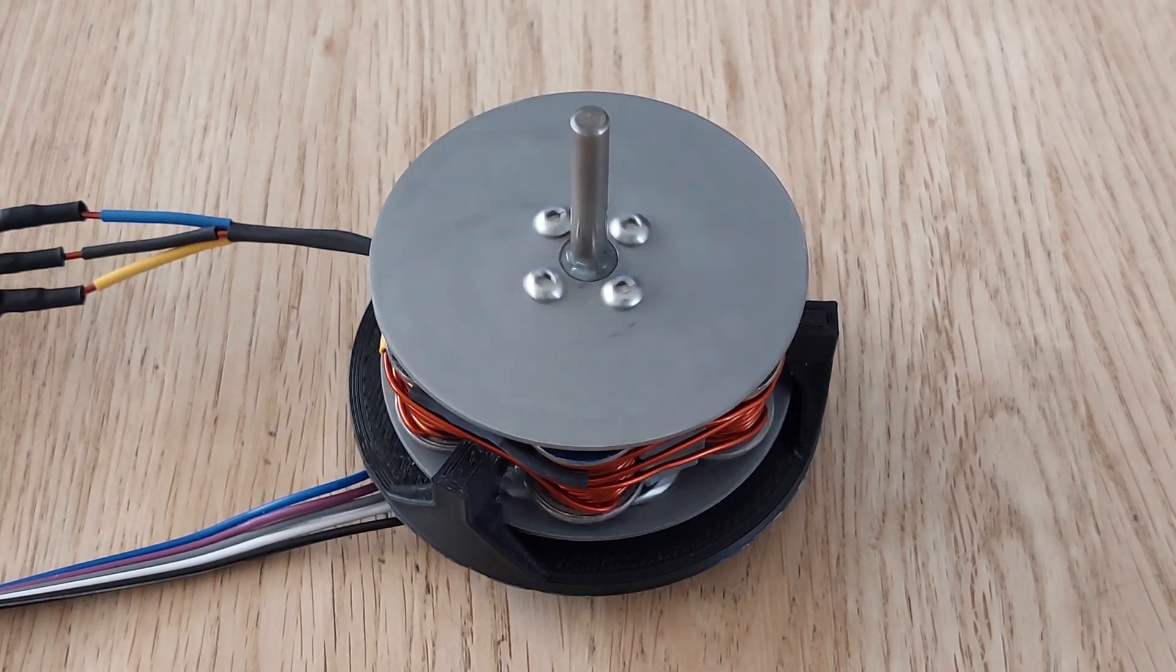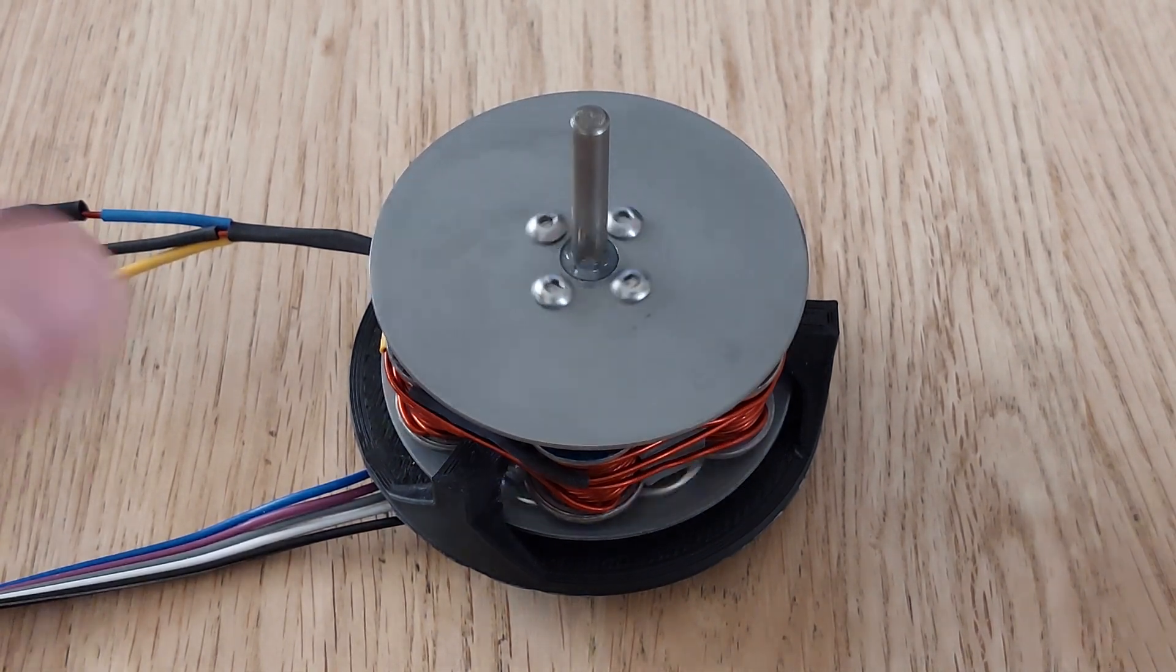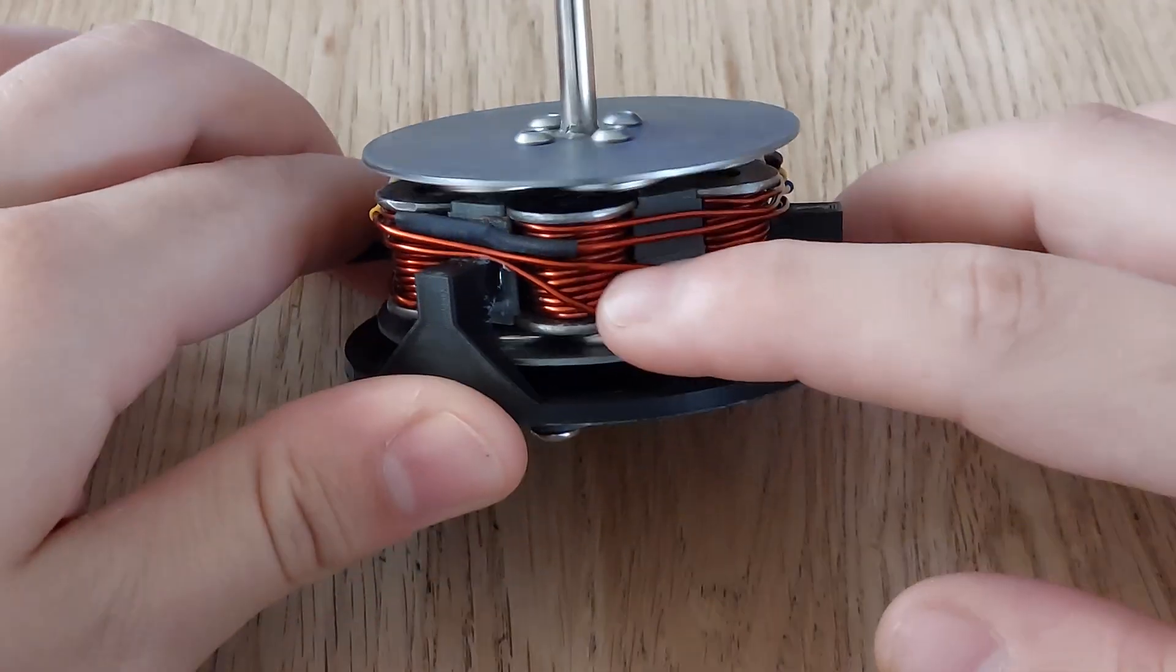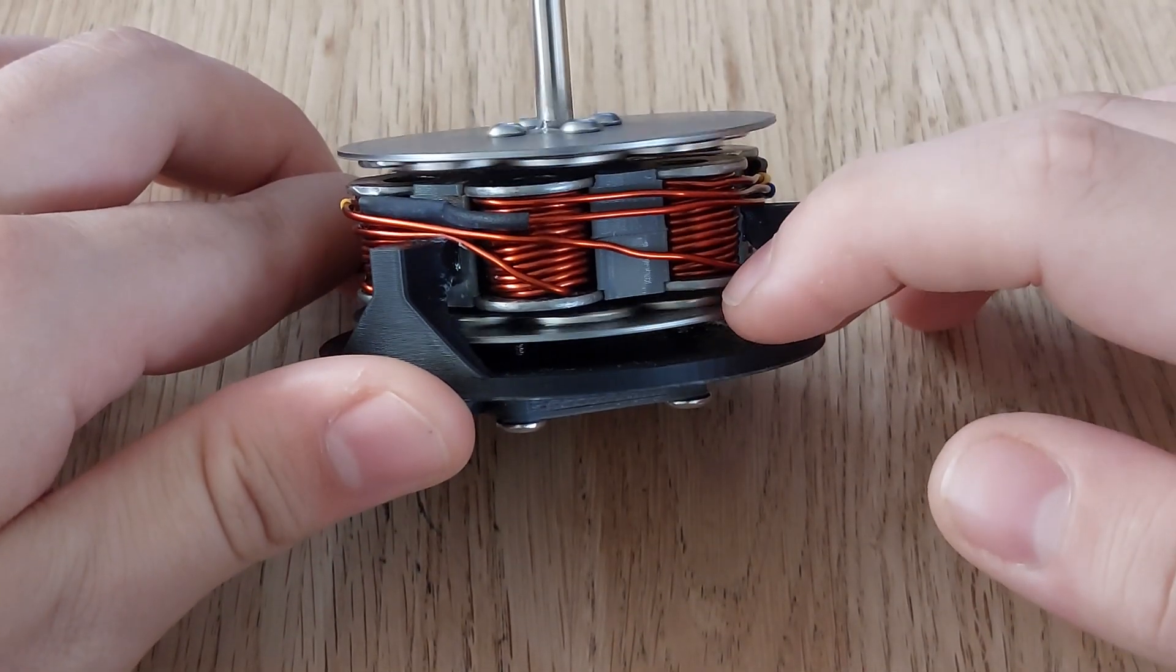Welcome to this video about this DIY axial flux motor with off-the-shelf parts. The stator consists of windings that are wound around spools.